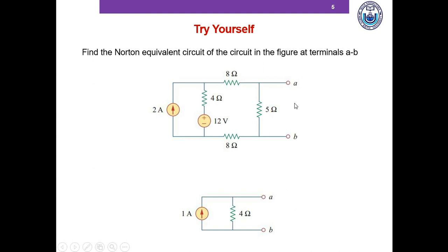To determine the Thevenin resistance, we look into the circuit and see that there are no dependent sources. To determine the Norton resistance, we replace all voltage sources with short circuits and all current sources with open circuits. If we do that, we have 8 ohm, 4 ohm, and 8 ohm in series. Combining them gives 20 ohm, and that 20 ohm is in parallel with 5 ohm, giving us a Thevenin or Norton resistance of 4 ohm.